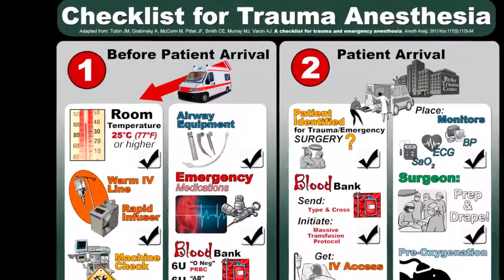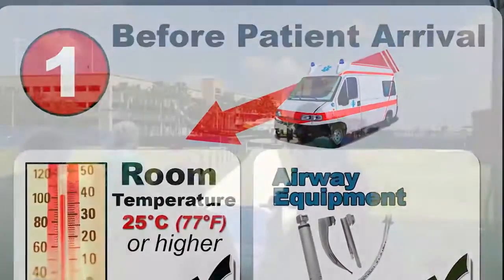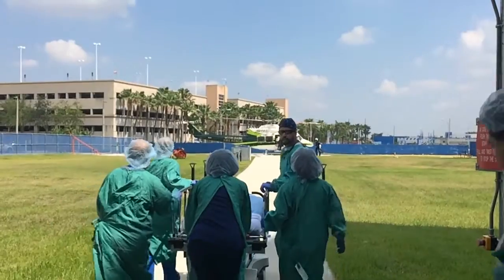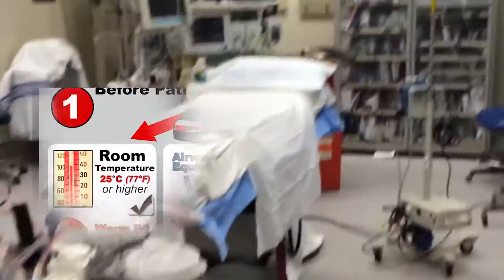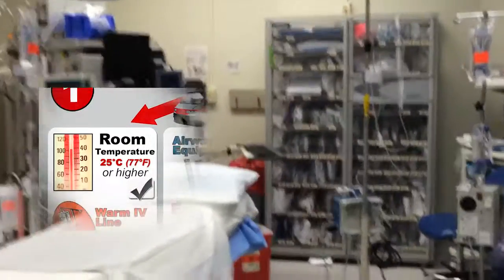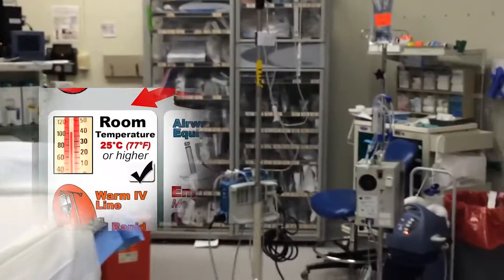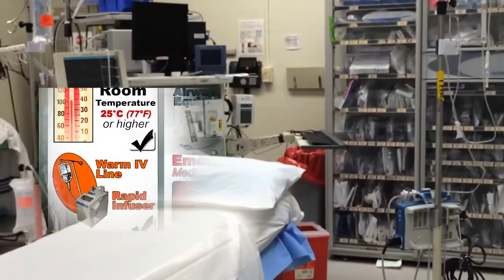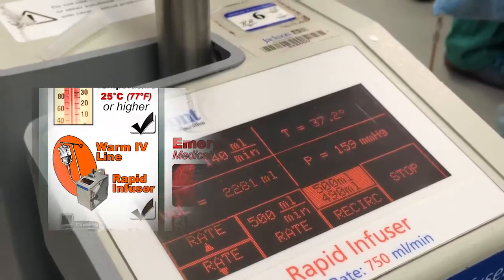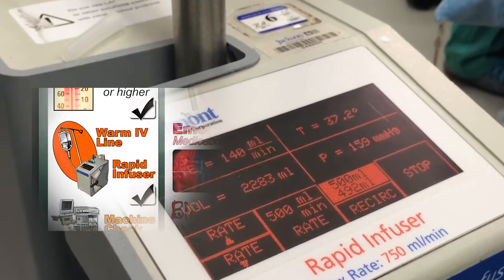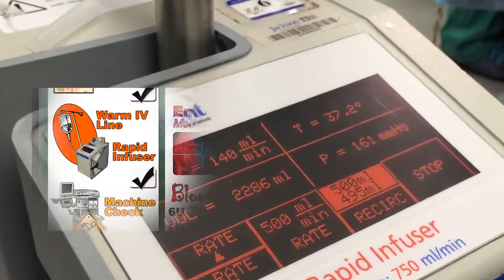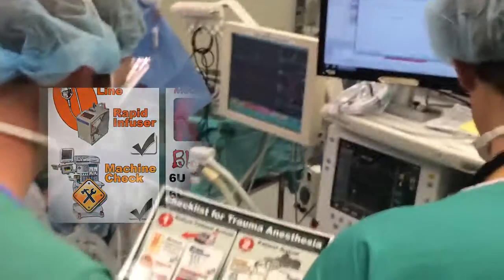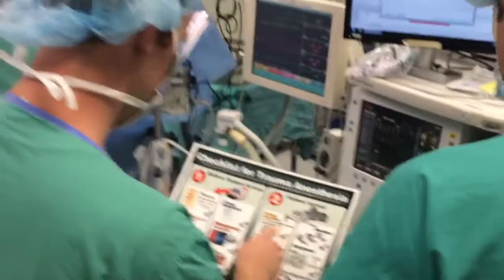Section one covers the essential steps to be performed before patient arrival to the hospital: warming the operating room to 25 degrees Celsius (77 degrees Fahrenheit) or higher, having a rapid infuser available, preparing a fluid warmer on the IV line, and performing a routine anesthesia machine check.